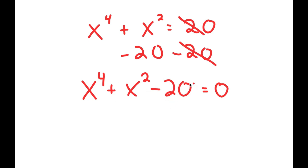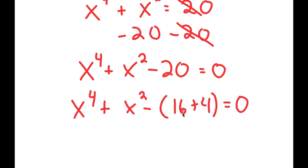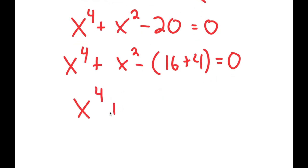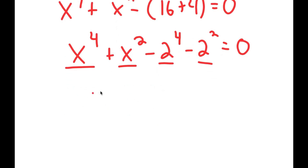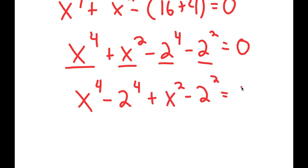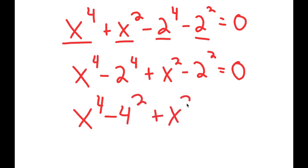We can't factor this using the quadratic formula because this is not a quadratic equation. So what I want to do is rewrite this as x to the power of 4 plus x squared minus 16 plus 4. I rewrote 20 as 16 plus 4, because negative 16 is the same thing as negative 2 to the power of 4, and negative 4 is the same thing as negative 2 squared. So now notice I have something in the power of 4 and something in the power of 2. I can put the powers of 4s together and the powers of 2 together, so I get x to the power of 4 minus 2 to the power of 4 plus x squared minus 2 squared equals 0.